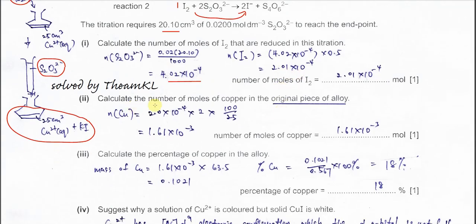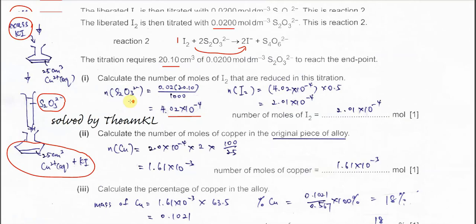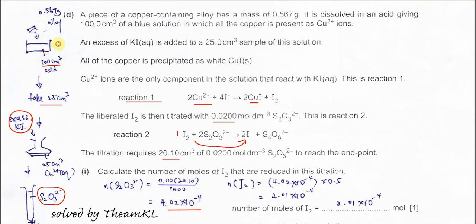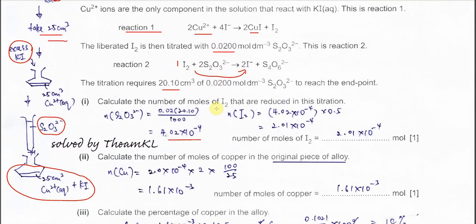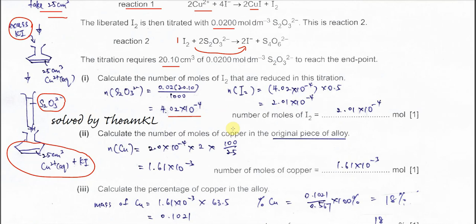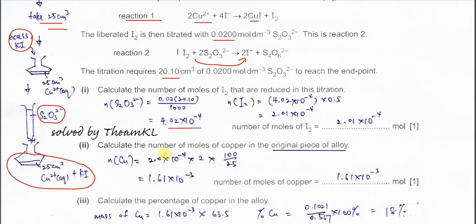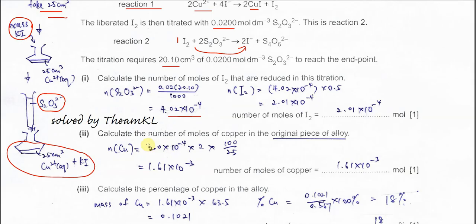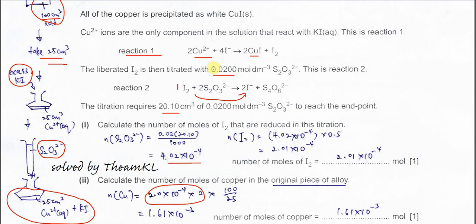After that, calculate the number of moles of copper in the original piece of alloy. You're going to get the moles of copper in 100 cm³, not this 25. You have to get the total moles of copper in the alloy. Use the moles obtained in part 1 times 2, because the mole ratio here is 2 to 1. Then here need to times 4, because it's 100 cm³ total but we use 25 for titration.